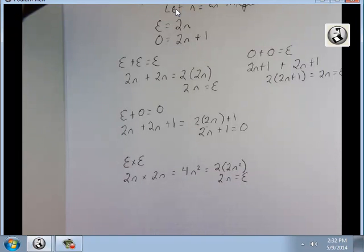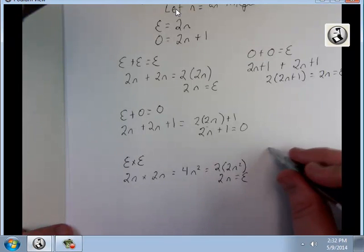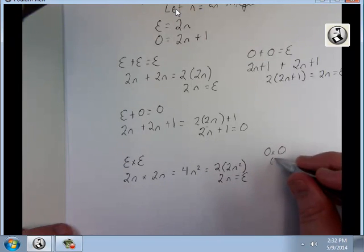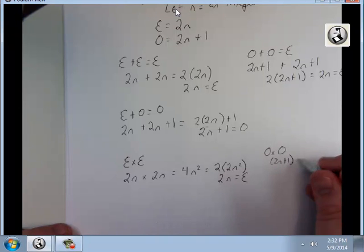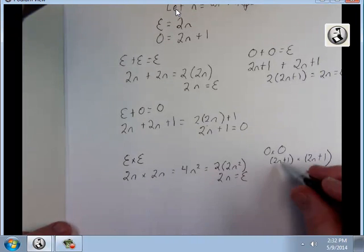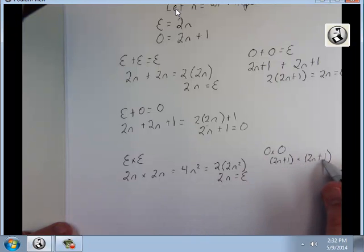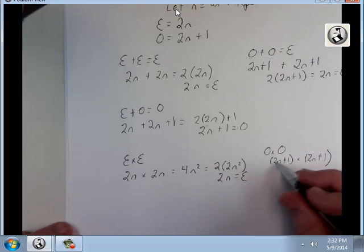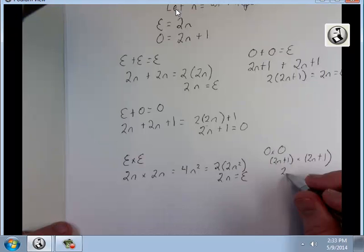How about odd times odd? So it's 2n plus 1 times 2n plus 1. And to do stuff like this, we'll get into in a later video, but basically I'm going to multiply this by both of those and this by both of those. So 2n times 2n is 4n squared, 2n times plus 1 is plus 2n, same thing there.